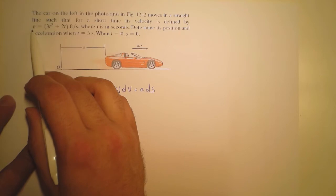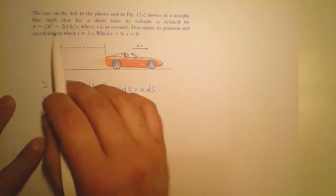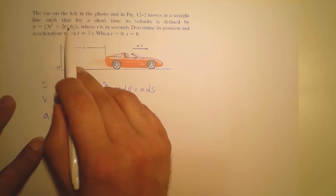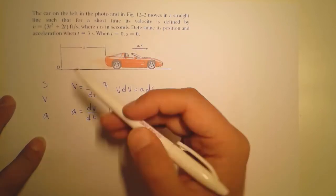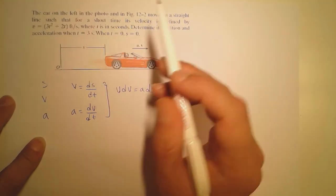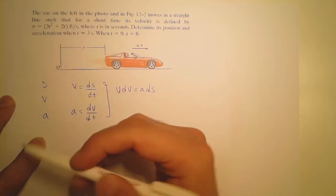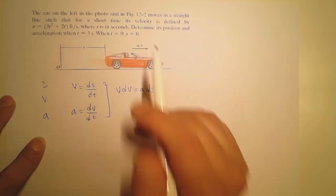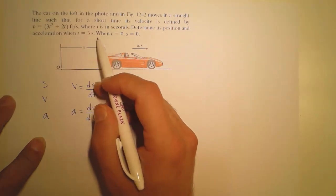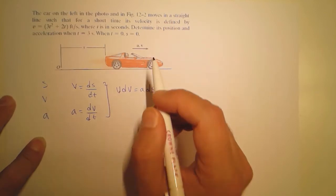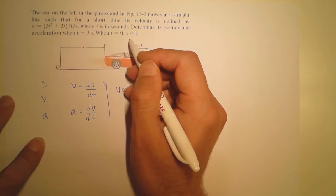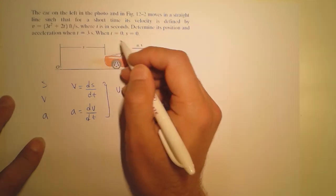The equation of the velocity of the car is related to time with a given relationship. It is required to find the relationship between position and time, and between acceleration and time. We also need to calculate the position and acceleration at time t equals three seconds.